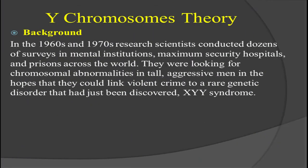To explore this theory further, let's look at its background. In the 1960s and 1970s, research scientists conducted dozens of surveys in mental institutions, maximum security hospitals, and prisons across the world. They were looking for chromosomal abnormalities in tall, aggressive men, hoping they could link violent crime to a rare genetic disorder that had just been discovered: XYY syndrome. Scientists, psychologists, and medical doctors tried to contribute their role in criminology by conducting experiments in mental institutions, security hospitals, and prisons in order to link crime with people having the genetic disorder of XYY chromosome.